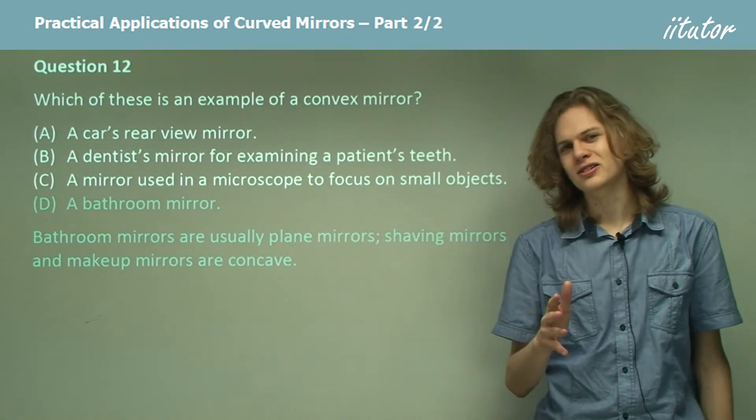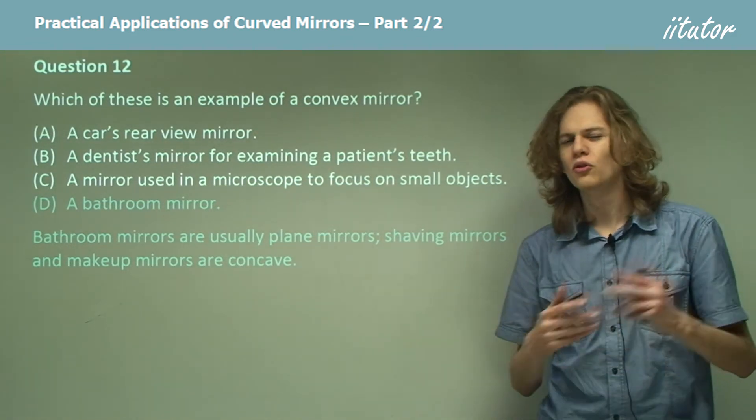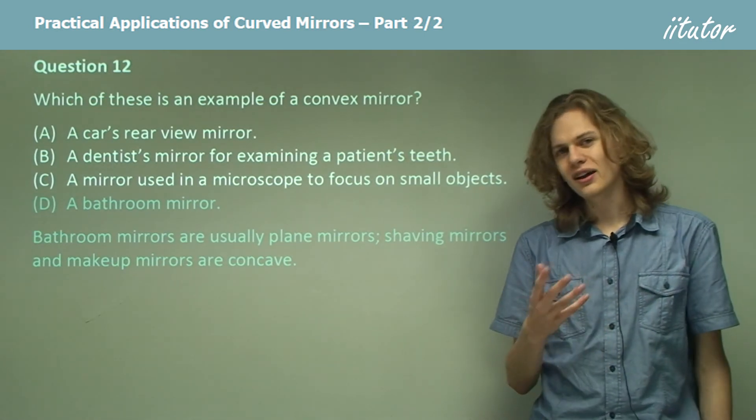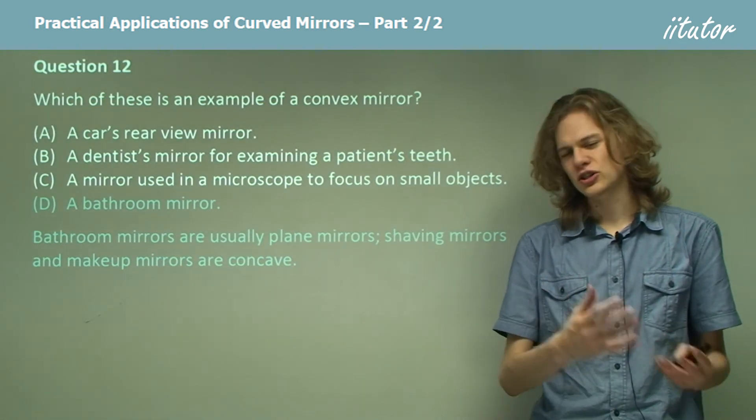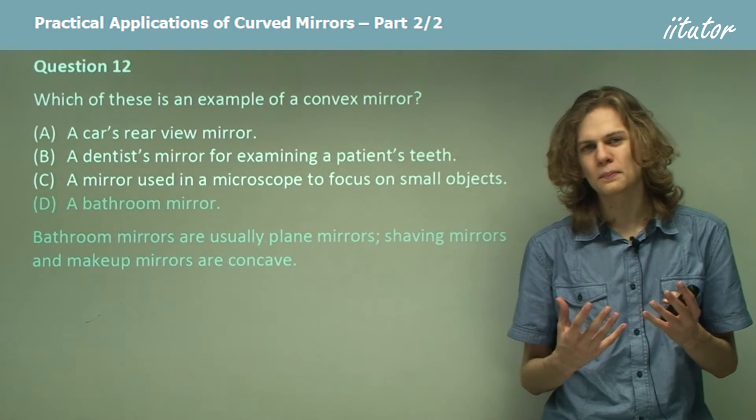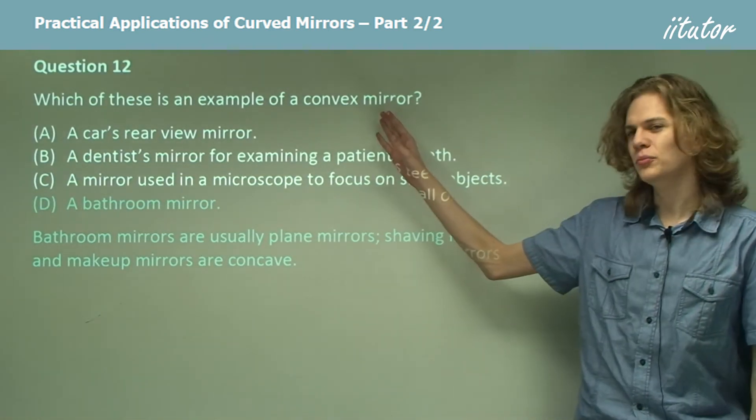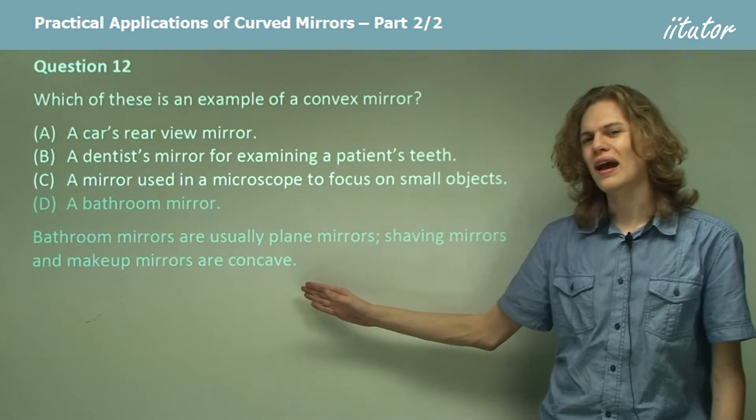Ah, but hang on, I can hear you say, what about a mirror for makeup or a mirror for shaving? In that case, we'd want the reflection to be bigger than the actual object. Ah, but if that were the case, then we wouldn't have a convex mirror. We would have a concave mirror.